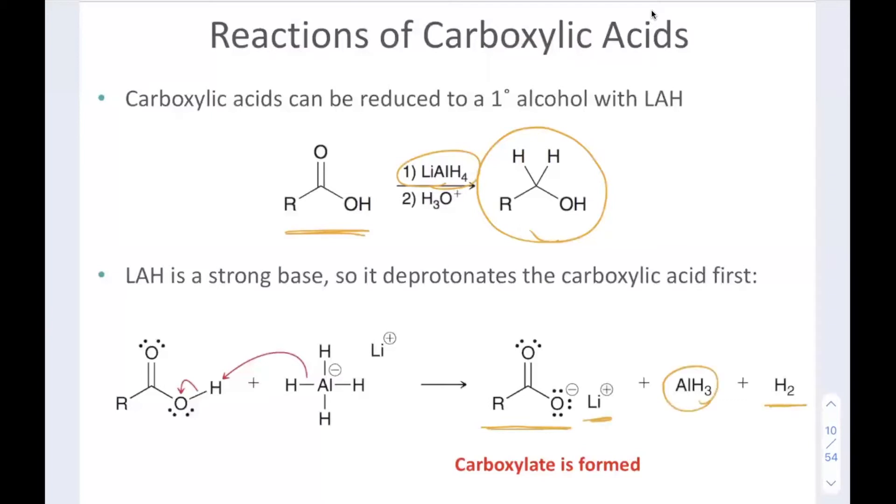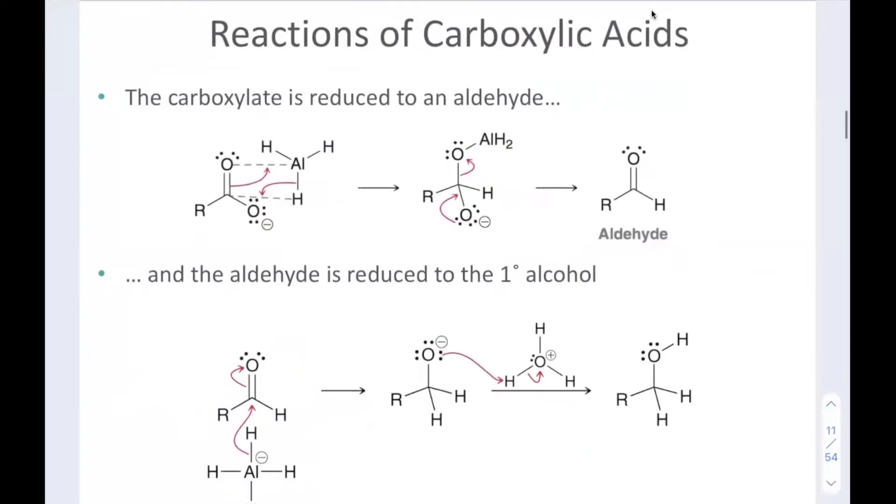ALH3 is formed with hydrogen gas. Once that carboxylate is formed, we have ALH3 that's going to form this four-membered ring transition state where we coordinate the aluminum with the oxygen of the carbonyl and the hydrogen with the carbon of the carbonyl. We end up transferring the ALH2 to the oxygen and the proton to the carbon.